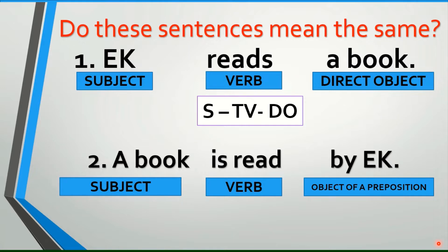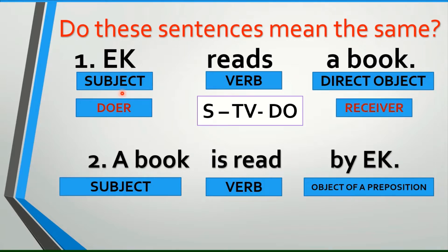Do these sentences mean the same? Number one: EK reads a book. Who is the doer? EK, and it's used as the subject. What is the receiver? A book, and it is used as a direct object. What does a direct object do in a sentence? It completes the meaning of a transitive verb. It answers the question that starts with 'what.' What does EK read? A book. So, this sentence follows the pattern S-TV-DO. S stands for subject, TV stands for transitive verb, and DO stands for direct object.